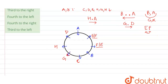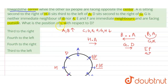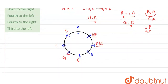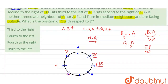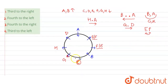Now the question asks: what is the position of C with respect to D? D is here on the diagram. D's first left, second left, and third left — C falls at D's third left. So C is third to the left of D. Checking the options: first is third to the right, second is fourth to the left, third is fourth to the right, and fourth is third to the left. Our answer is third to the left — that is option number four, which is the correct answer.